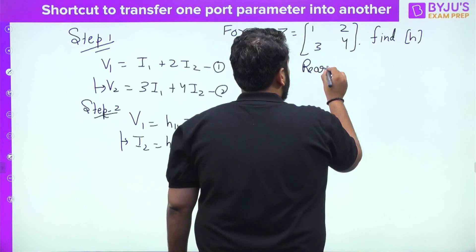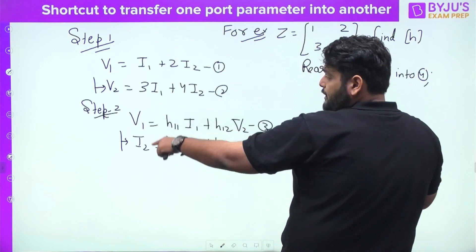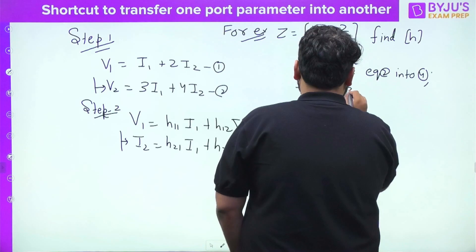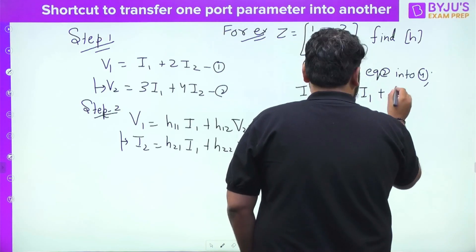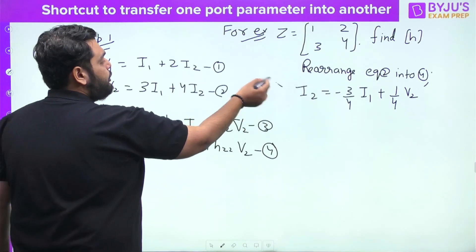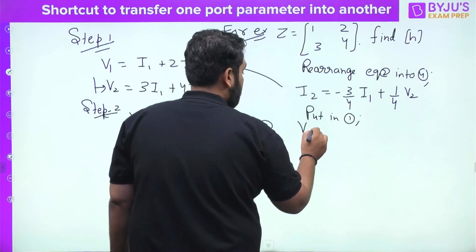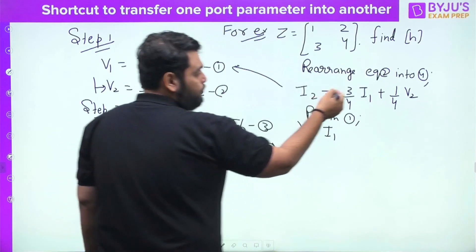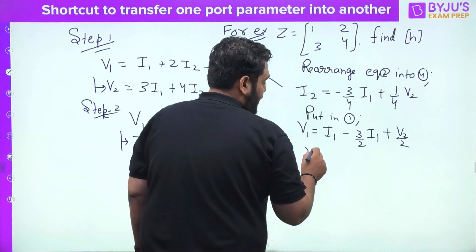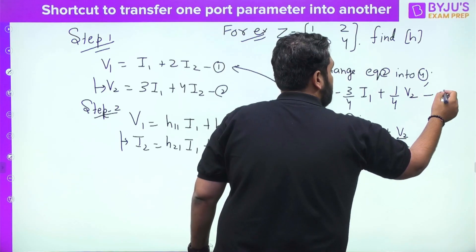So you rearrange equation 2 into the form of equation 4. Rearranging V2 = 3·I1 + 4·I2 gives: I2 = −(3/4)·I1 + (1/4)·V2. This is the rearranged equation. Now substitute this into the remaining equation — equation 1. Putting it into V1 = I1 + 2·I2 gives V1 = I1 + 2·(−3/4·I1 + 1/4·V2), which simplifies to V1 = −(1/2)·I1 + (1/2)·V2.